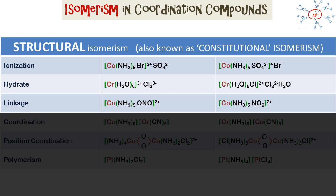In this type of structural isomerism, the central metal ion Co is linked to the lone pairs of electrons of oxygen, whereas in this case the central metal ion is linked to the lone pair of electrons of nitrogen. This is linkage isomerism.